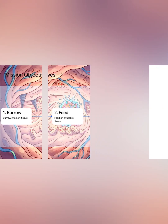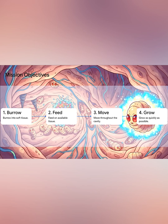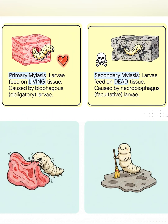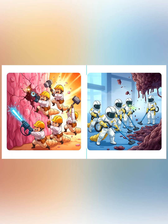Larvae burrow inside soft tissue — they feed, they move, they breathe, and they grow. There are two types of larvae: primary myiasis, which is biophagous, meaning they eat living tissue; and secondary myiasis, where the larvae are necrobiophagous — they only feed on decaying tissue, like a cleanup crew.